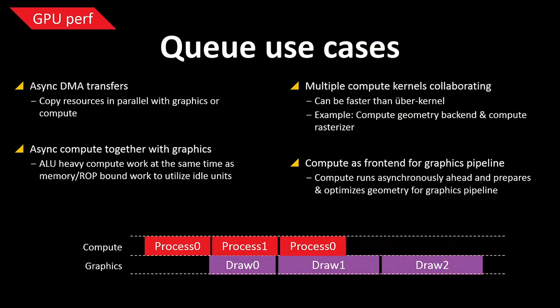Another interesting use case — more R&D at this stage — is running multiple compute kernels in parallel collaborating with each other. Instead of a large Uber kernel, you can create a producer-consumer pattern where one compute kernel generates work for another, for example doing custom conservative rasterization. This can run simultaneously with graphics work. Inspired by PS3, compute can also help cull geometry — instead of the CPU issuing more draw calls, the GPU can cull or process geometry differently, and upcoming game engines will move more toward building large GPU job graphs.